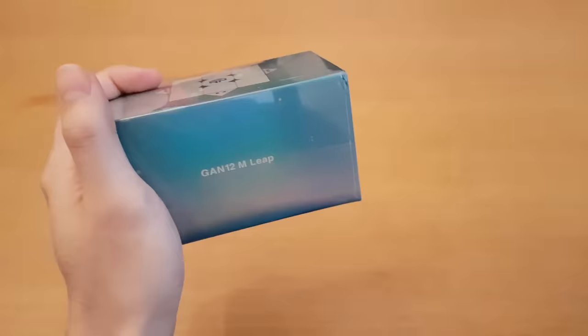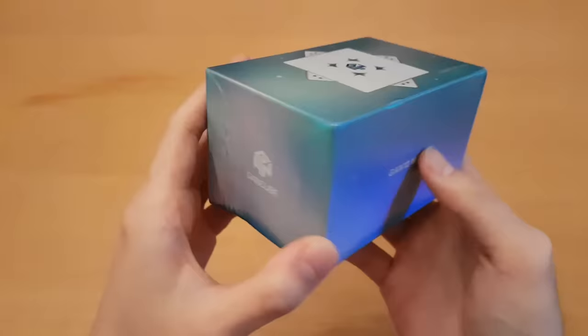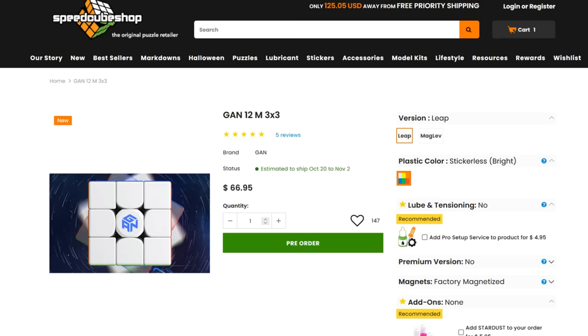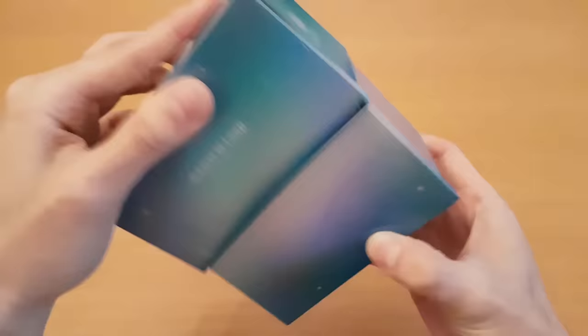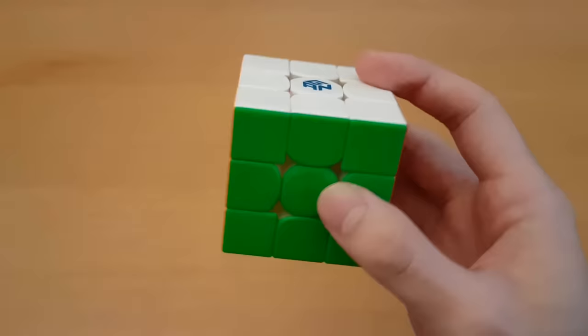We have the GAN 12M leap as well. Wait a minute, this one was not GAN 12M, it was just maglev. Even though this M means the magnets between the pieces, and this one means in the core. Cube names never make sense. FedEx destroyed the box, but at least it was for the leap and not for the maglev, because the leap is the cheaper one and therefore the worse one, right? That's how cube prices work. It already feels different on the outside. This cube has frosted plastic, which is different from the UV plastic on the maglev. But I'm just gonna do some turns first and talk about that later.